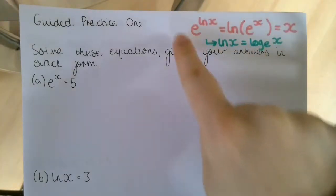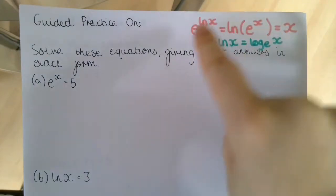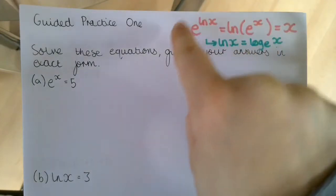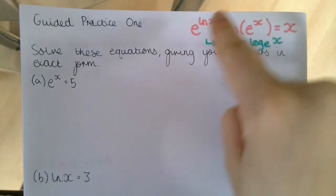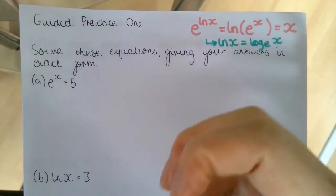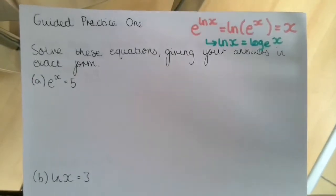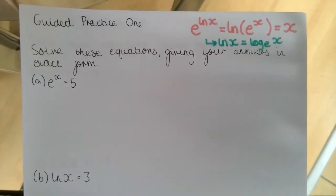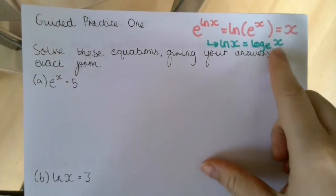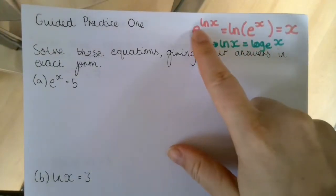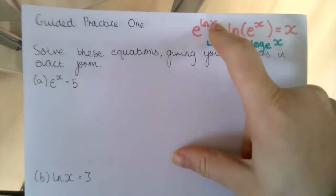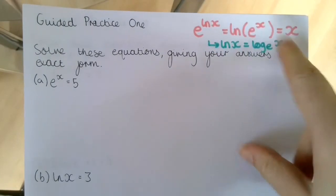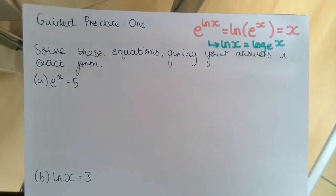The key information from the input slide: you were given a graph showing that y equals e to the power of x is the inverse of the graph of y equals ln x — that natural logarithm with base e. So if we take the exponential of that natural logarithm we're going to get x back, because they are inverse functions.